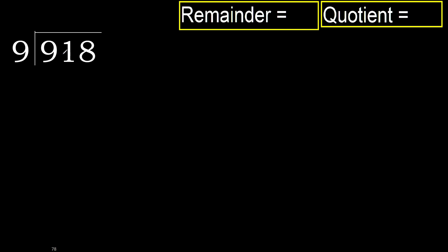918 divided by 9. 9 is not less, therefore work with 9. 9 multiplied by which number is nearest to 9, but not greater?